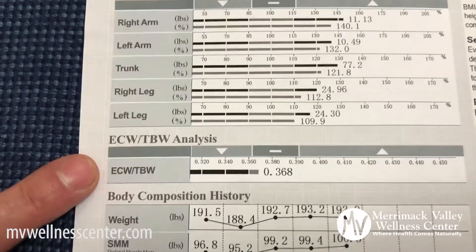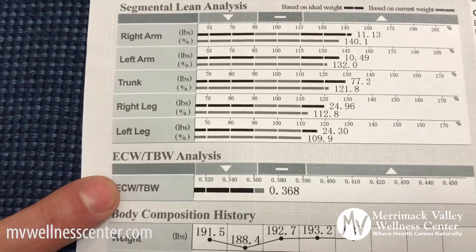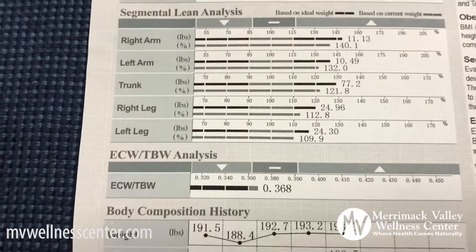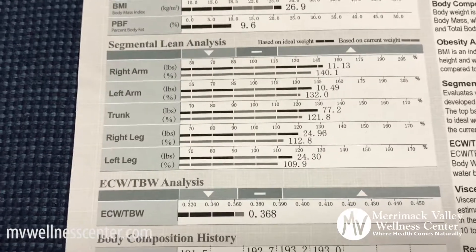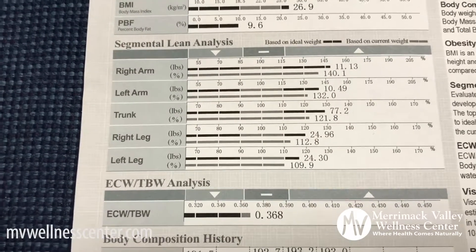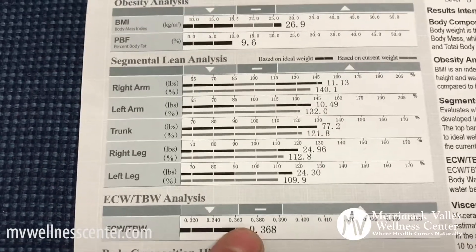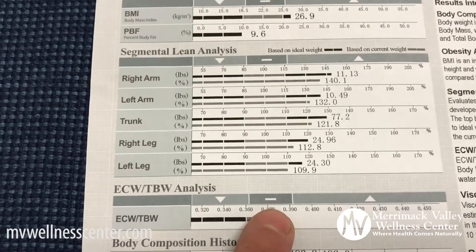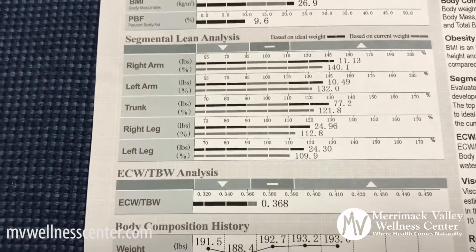There's also an interesting number here: the ratio between extracellular water and total body water. Extracellular water is the water outside your cells; total body water is all water combined. Ideally your extracellular water should be about one-third of your total body water, with two-thirds being intracellular. You should fall between 0.36 to 0.39. Anything above that can indicate a disease state that would require further analysis.